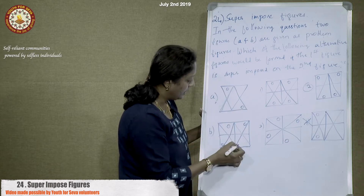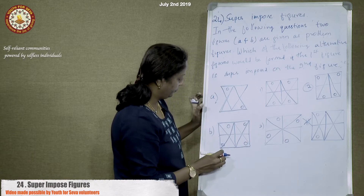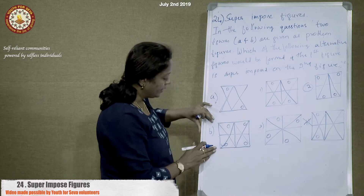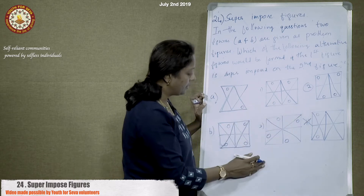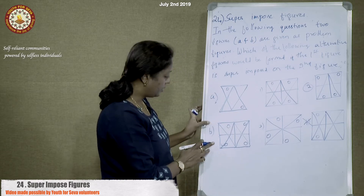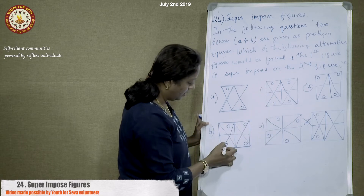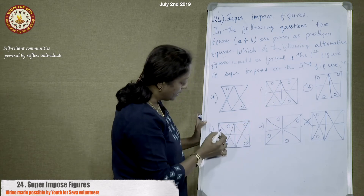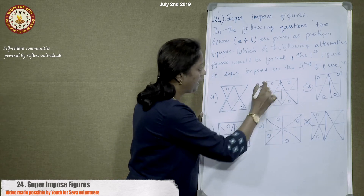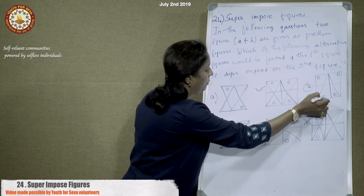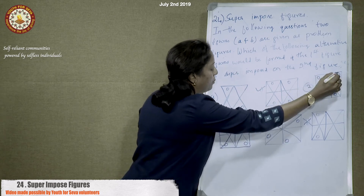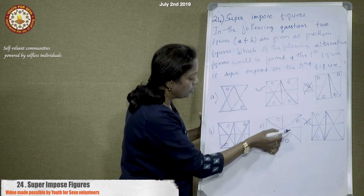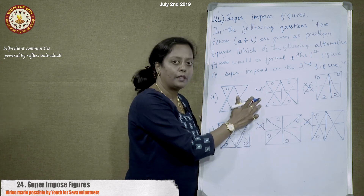Looking at the resulting figure, option one matches — it has four circles, the vertical and horizontal lines, and the correct triangles. Option two is missing the top superimposed triangle, so it is wrong. Option three has no triangle present, so it is also wrong. The correct answer is option one.